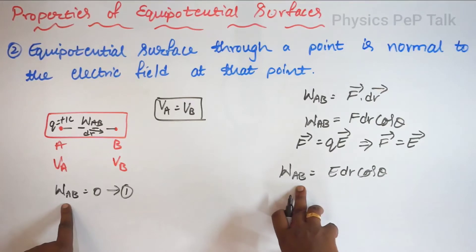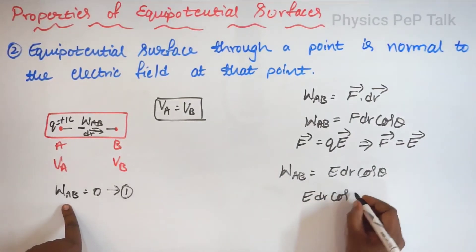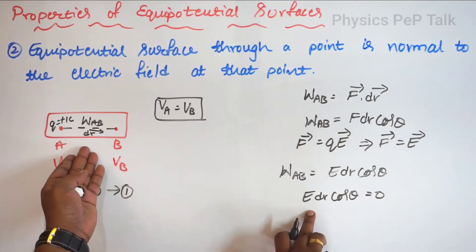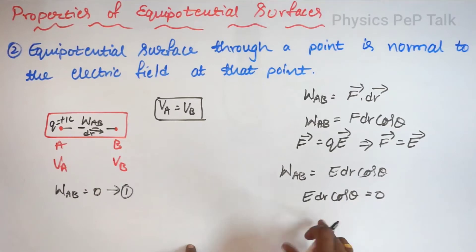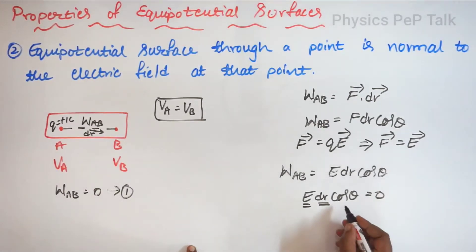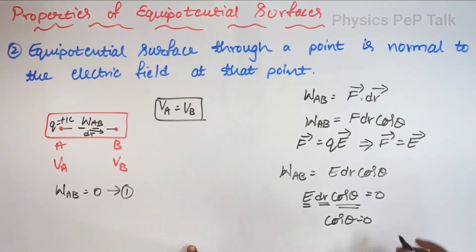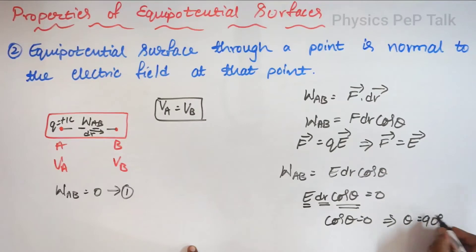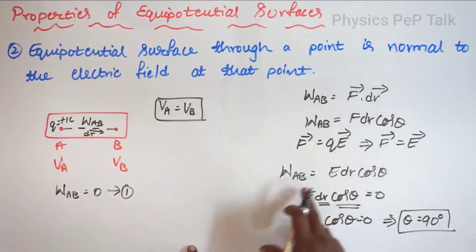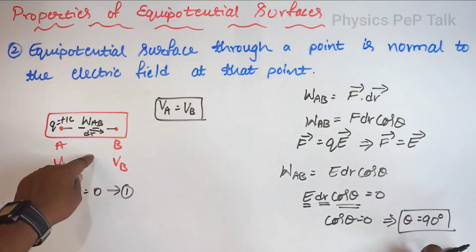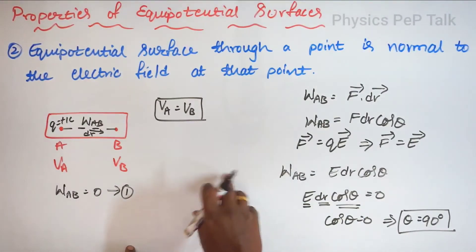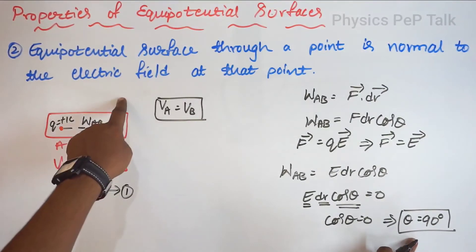Since W of AB is zero, E dr cos theta must equal zero. The electric field E is not zero, and I have displaced the charge through a small displacement dr which is also not zero. Therefore the term that must be zero is cos theta. Cos theta equals zero only when theta is 90 degrees. This means the equipotential surface and the electric field are perpendicular to each other — that is property number two.